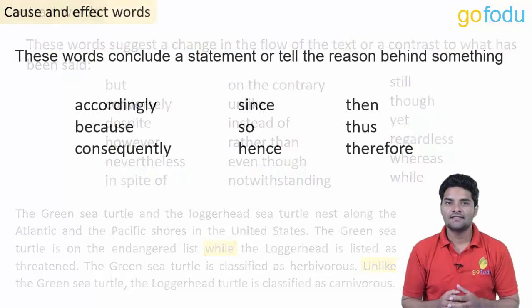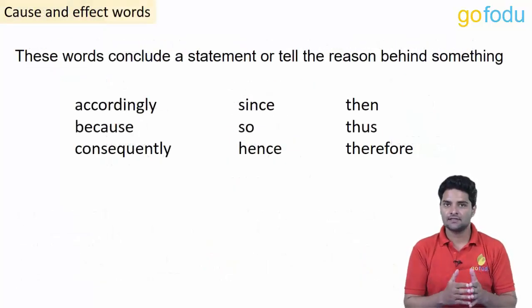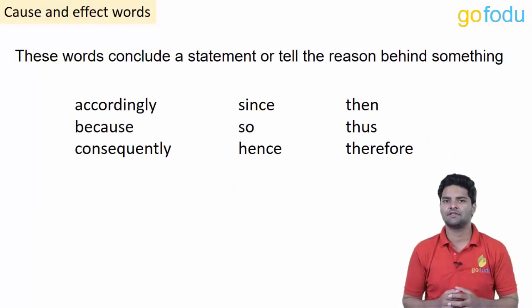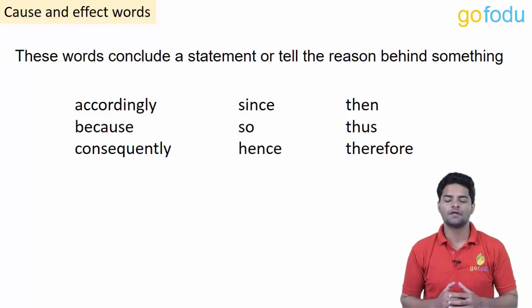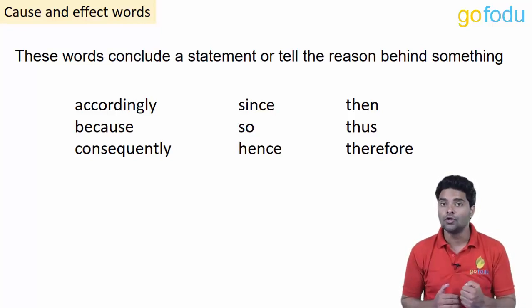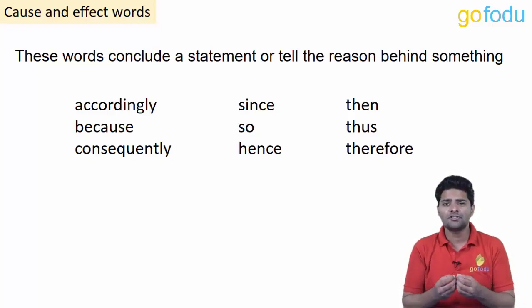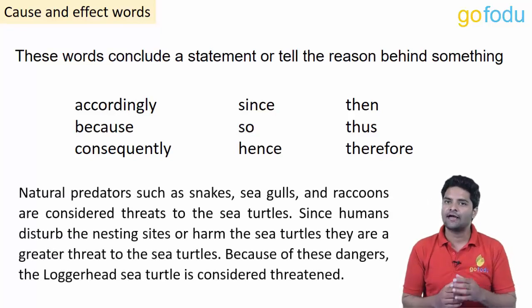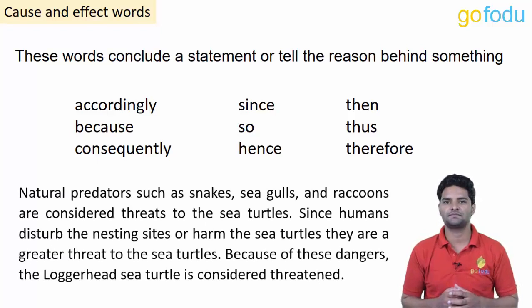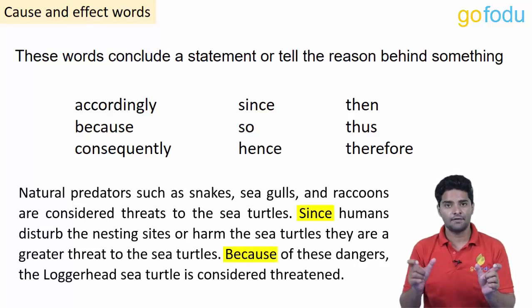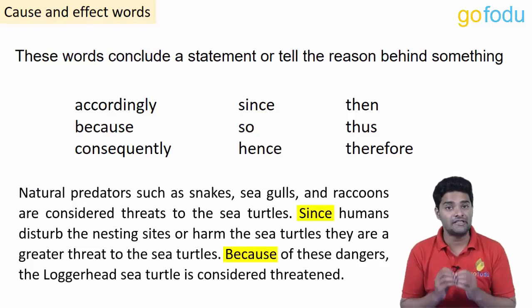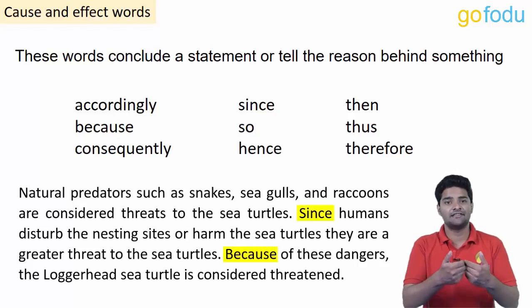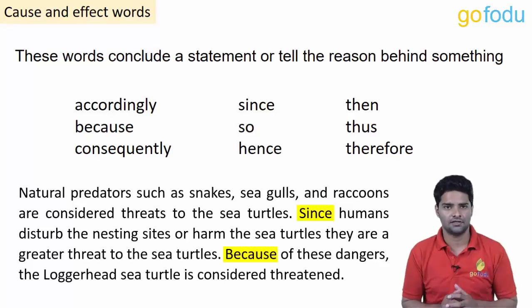Words like 'accordingly,' 'since,' and 'because' fall under the category of cause and effect words. These words conclude or provide the reason behind what is mentioned before them. In a passage about sea turtles, 'since' and 'because' are just giving reasons why sea turtles are under threat, which is the main gist.